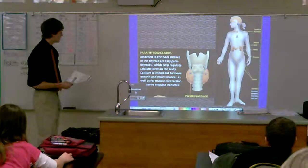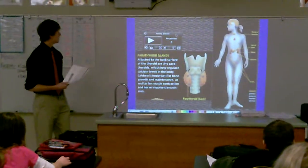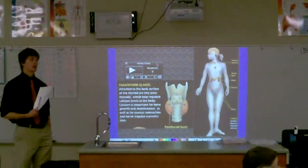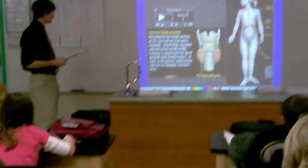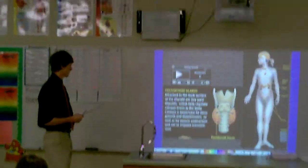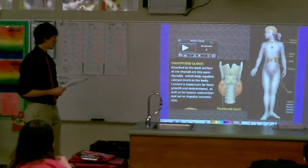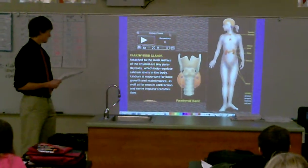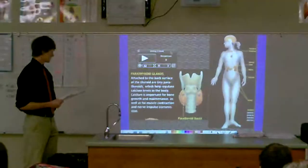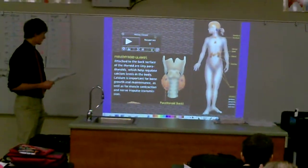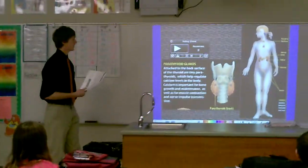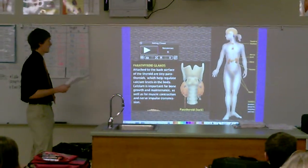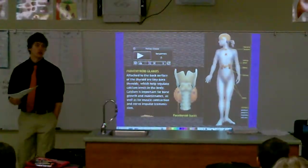So that leads us into the parathyroid gland. Attached to the back surface of the thyroid, we have four parathyroid glands. The parathyroid gland helps regulate calcium levels in your body. Calcium is important for bone growth as well as muscle contraction. This one is also located in your throat. Another word for two is 'pair' — so this would be a way you can distinguish this one as parathyroid, but there are actually four. Notice how there's one on each side. Located in your throat — parathyroid.